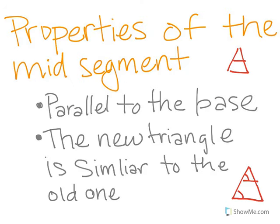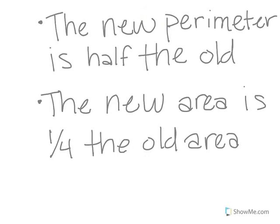Properties of the mid-segment include that the mid-segment is parallel to the base, the new triangle is similar to the old one, so the angles are the same, the new perimeter is half the old, and the new area is one-quarter of the old area.